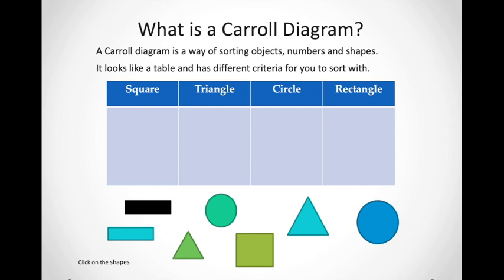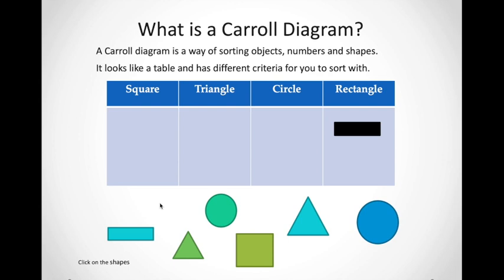Here we have a table and we need to sort out all these shapes: square, triangle, circle, rectangle. Let's try and begin. Does this belong to a square, triangle, circle or rectangle group? If you've guessed rectangle, well done. Let's look for other shapes that look just like this.